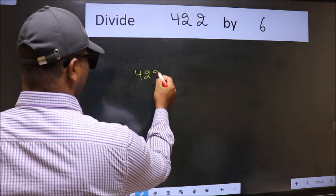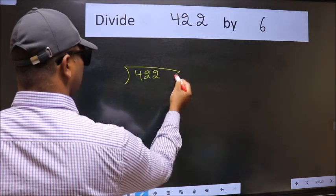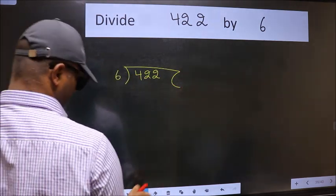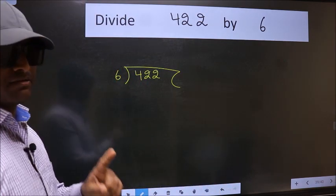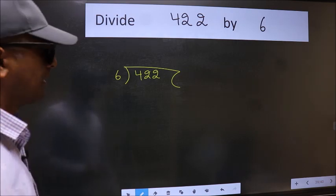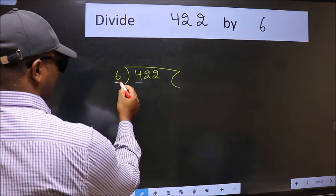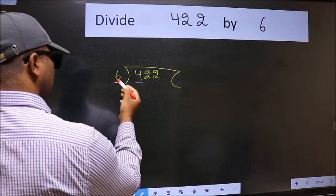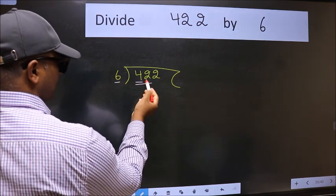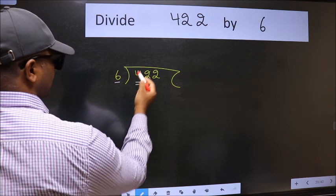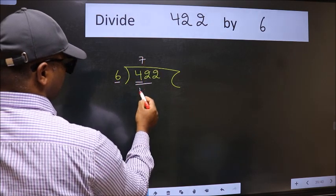422 and 6 here. This is your step 1. Next, here we have 4 and here 6. 4 is smaller than 6, so take two numbers, 42. When do we get 42 in the 6 table? 6 times 7 is 42.